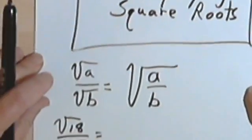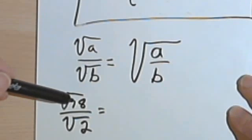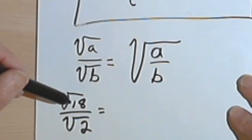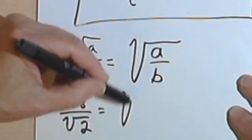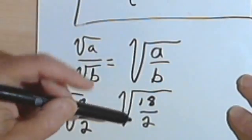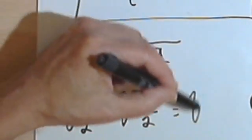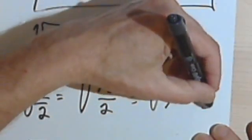Here's an example of how it works. Let's say we have the fraction the square root of 18 over the square root of 2. There's no simple square root of 18, and there's no simple square root of 2, but we can combine these into the square root of 18 over 2. Then 18 divided by 2 gives us 9, so we'll have the square root of 9, and the square root of 9 is just going to be 3.